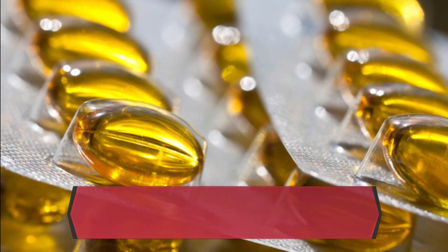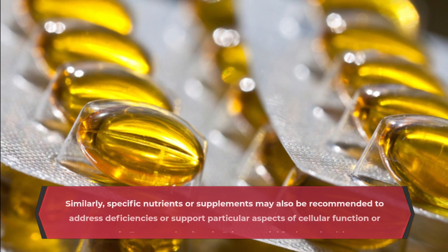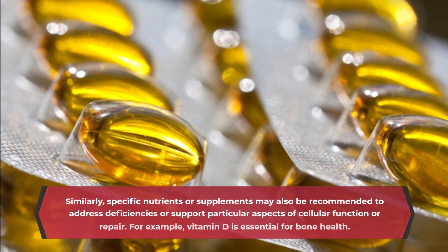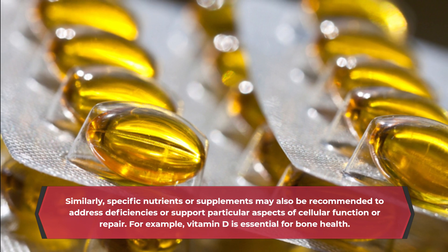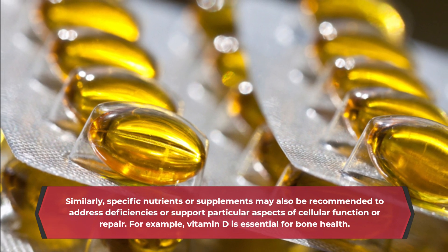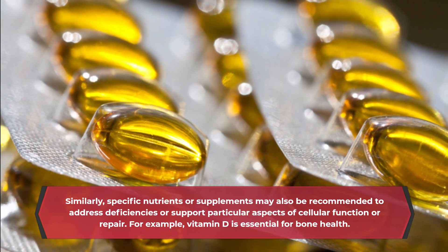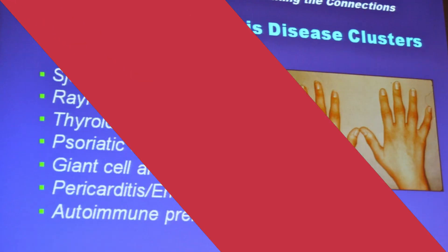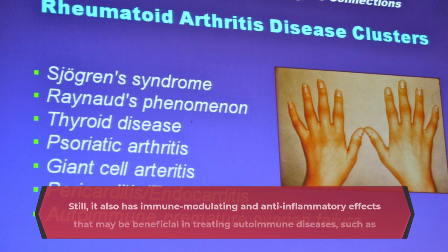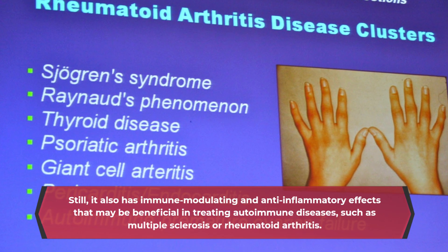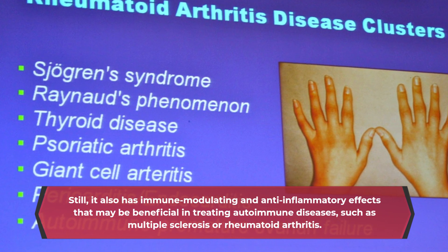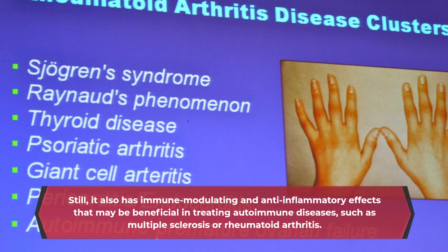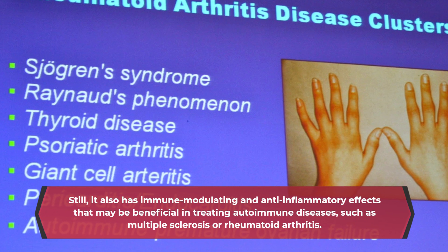Similarly, specific nutrients or supplements may also be recommended to address deficiencies or support particular aspects of cellular function or repair. For example, vitamin D is essential for bone health, but it also has immune-modulating and anti-inflammatory effects that may be beneficial in treating autoimmune diseases such as multiple sclerosis or rheumatoid arthritis.